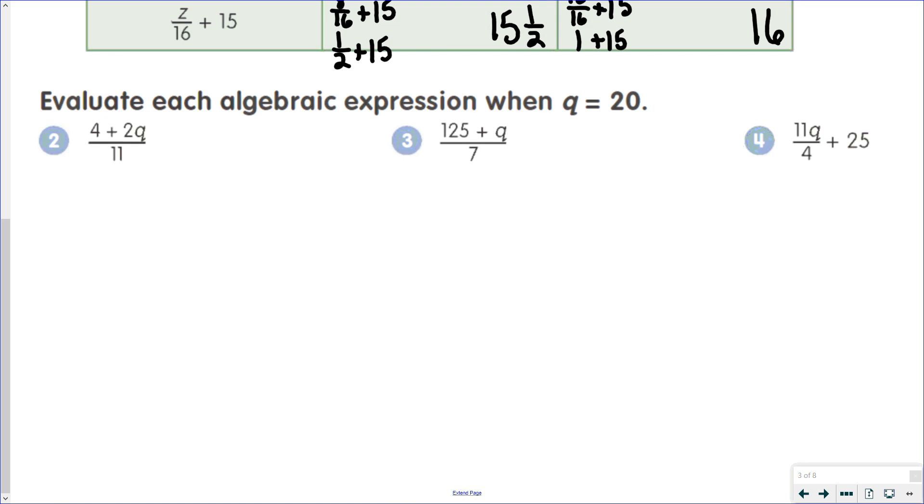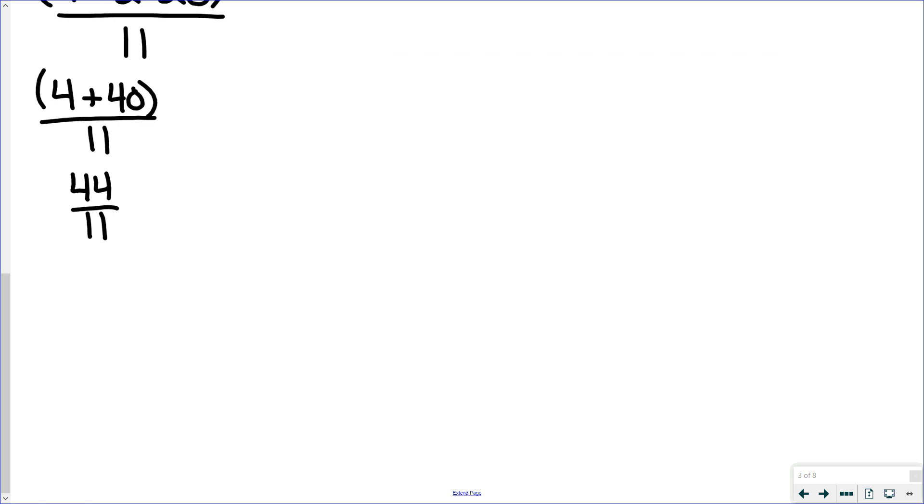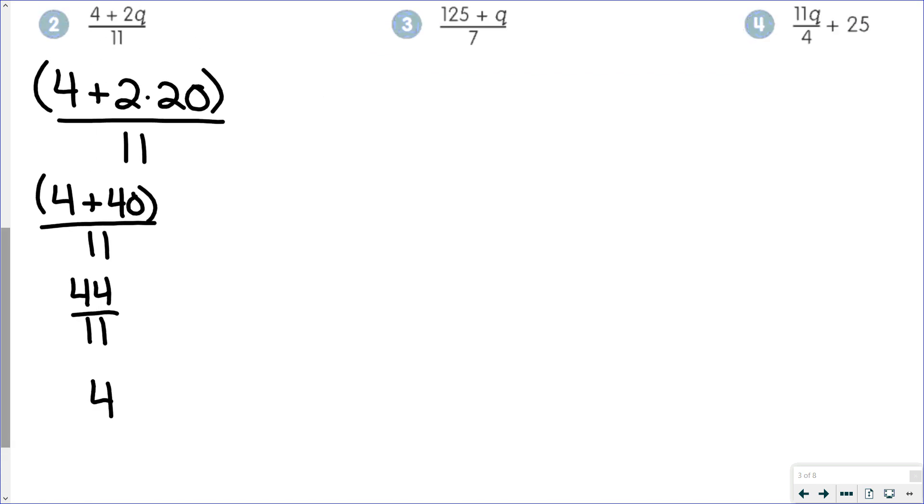So evaluate each algebraic expression when Q equals 20. So we would have 4 plus 2 times 20 over 11. So when we have a situation like this, what we want to do is take what's on top, and we want to think about that as being in parentheses. And a good rule of thumb here when working with these is to do one step at a time. As you notice, my first step on each of these was to do the substitution. And after that, just do one thing at a time. So if I follow my order of operations, I'm going to take 2 times 20. 2 times 20 is 40. Then I'm going to take 4 plus 40, which is 44. And then we would have 44 over 11, which is 4.